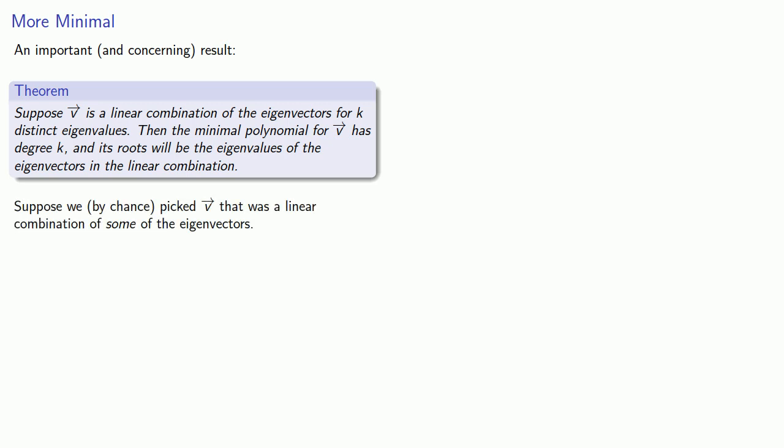But here's why this is concerning. Suppose we, by chance, picked a vector v that was a linear combination of some of the eigenvectors. Then our minimal polynomial would only find those eigenvalues, and we might end up missing many of the actual eigenvalues.